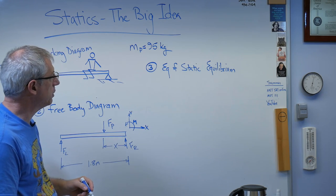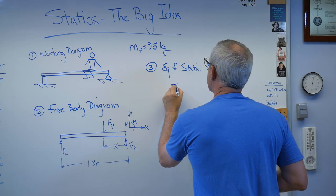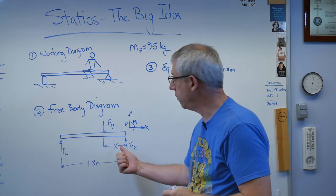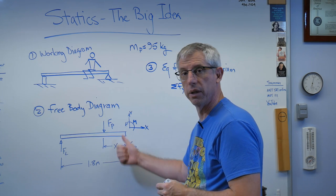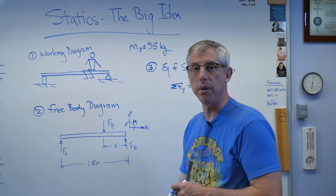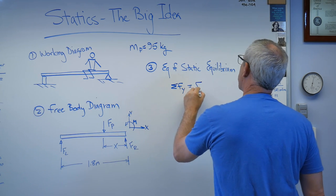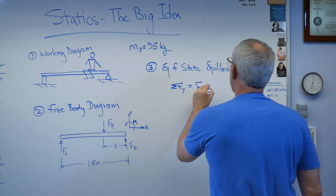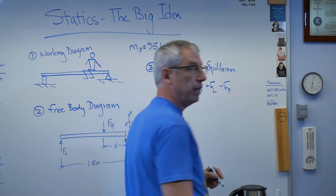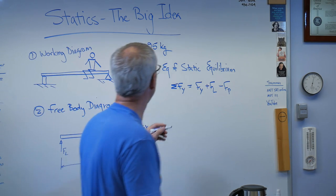We've got forces in the y direction, so sum of forces in the y direction: forces going up, the force of the pivot against the bottom of the beam is up, the force of the can on the bottom of the beam is up, and the force of me on the top of the beam is down. So FR goes in the positive y direction, FL also in the positive direction, force of the professor is in the negative direction.